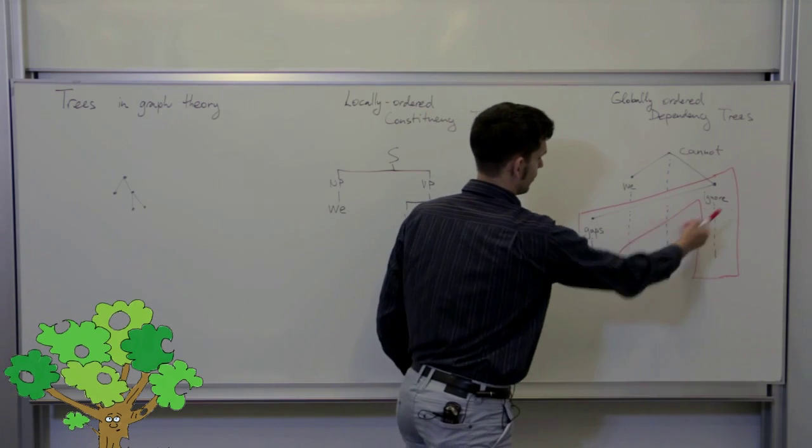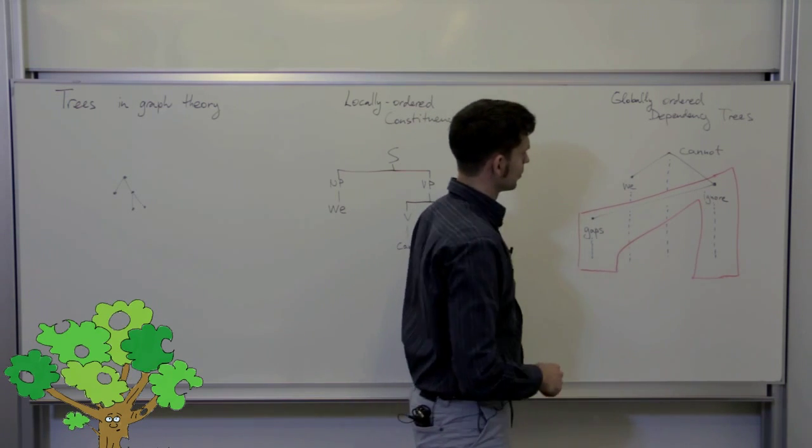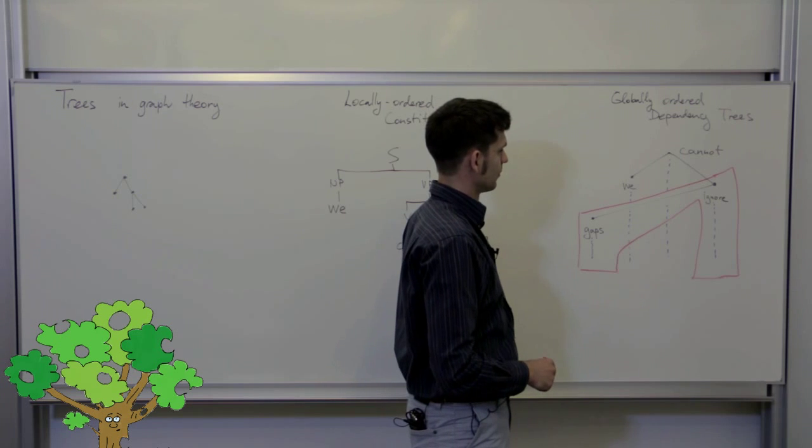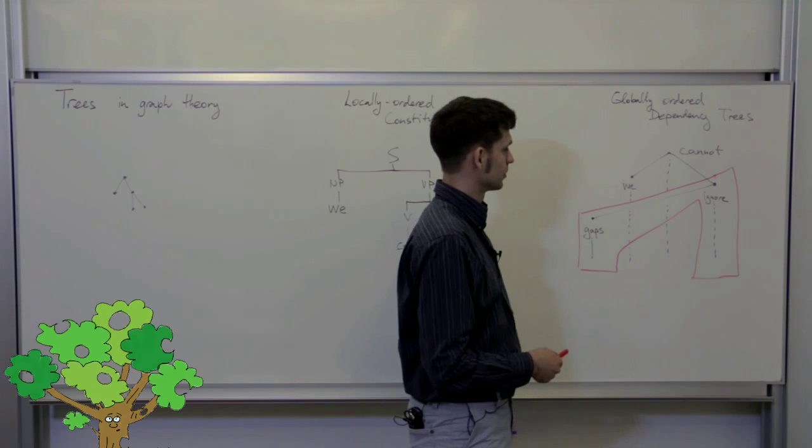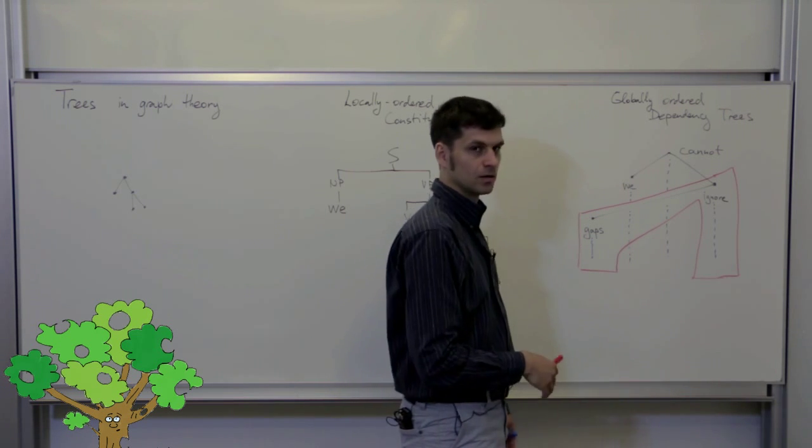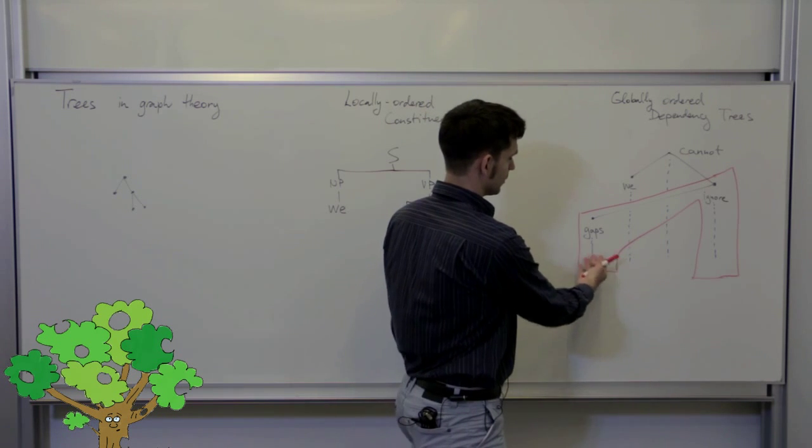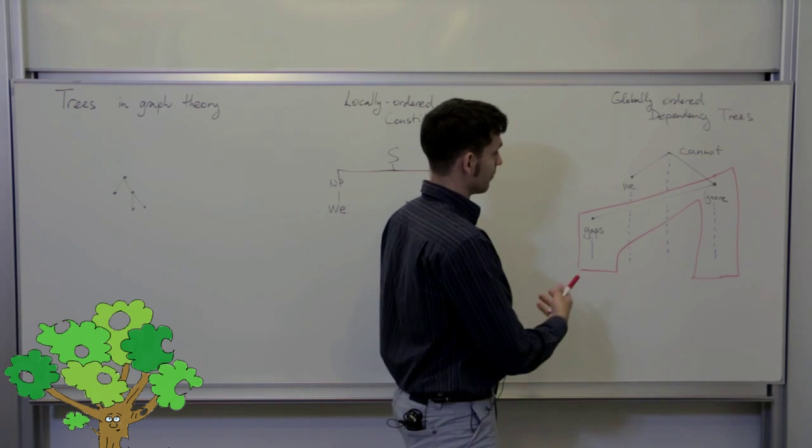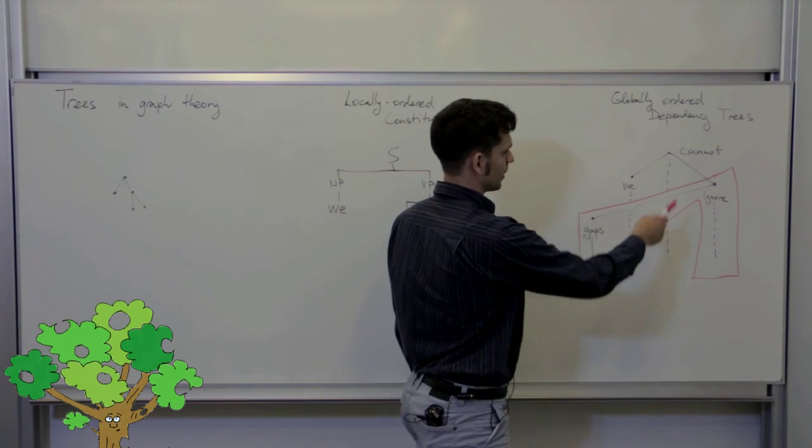This structure—a sub-tree with a gap—is called a non-projective construction. And in English, we can see such constructions for sentences such as this one that are topicalized. The word 'gaps' has been fronted to emphasize it: Gaps we cannot ignore.